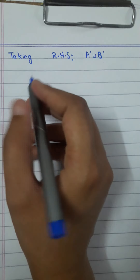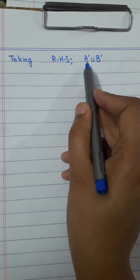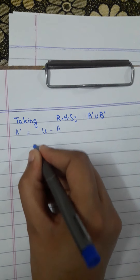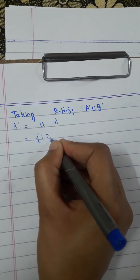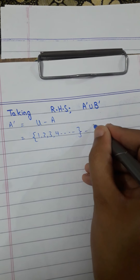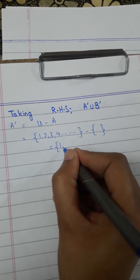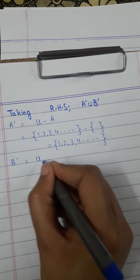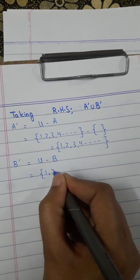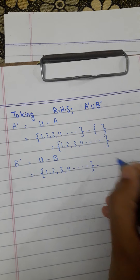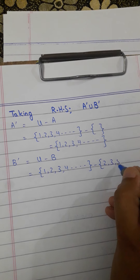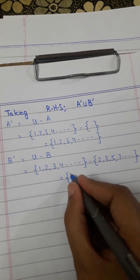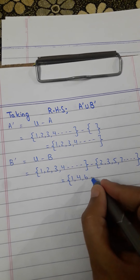Now taking the right-hand side: A'∪B'. First find A complement: U minus A = {1, 2, 3, 4, ...} minus the empty set = {1, 2, 3, 4, ...}. Now find B complement: U minus B = {1, 2, 3, 4, ...} minus {2, 3, 5, 7, ...}. The answer becomes those members present in U but not in B: {1, 4, 6, ...} and so on.